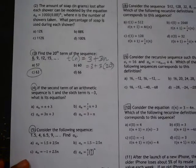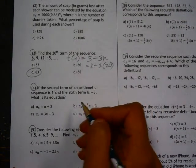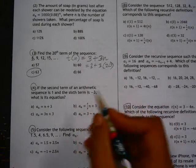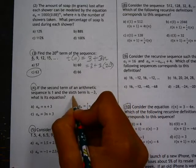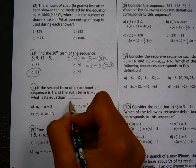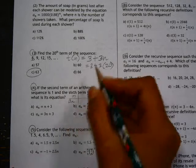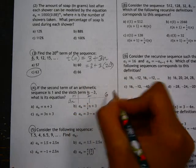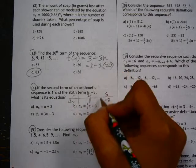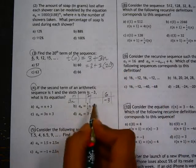Alright, on number four, we're given the second term of an arithmetic sequence and the sixth term. So I'm going to make a table and put the information that is known. We know the second term is one and the sixth term is negative three.